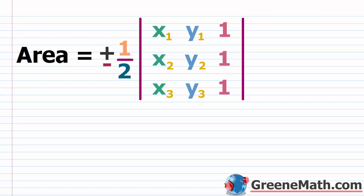We also expanded on that and looked at a formula to determine if three points were collinear. Let's recap that quickly. We know that for the area of a triangle, we can take three vertices and label them as x₁, y₁; x₂, y₂; and x₃, y₃. It doesn't matter what gets labeled as what, so you plug into this formula and take the determinant.